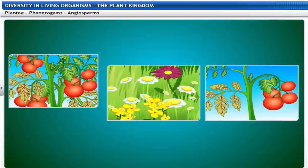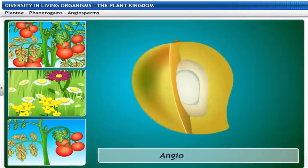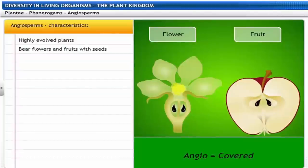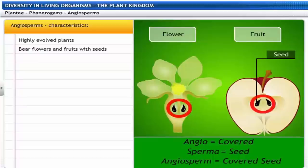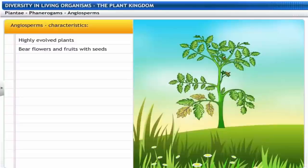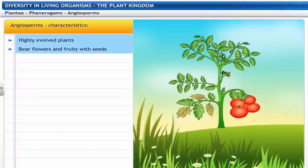The opposite of Gymno in Greek is Angio, meaning covered — hence the word Angiosperm means covered seed. Angiosperms are highly evolved plants with flowers, fruits and seeds. They are also called flowering plants.